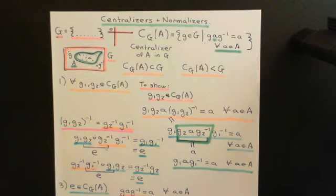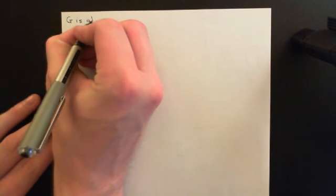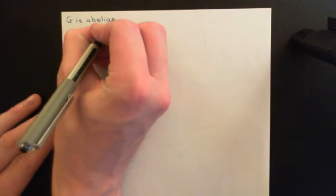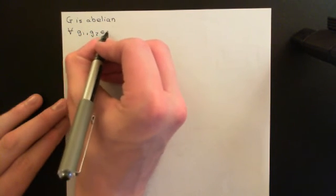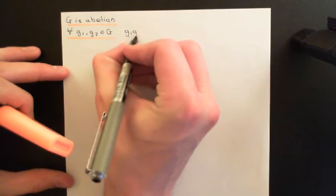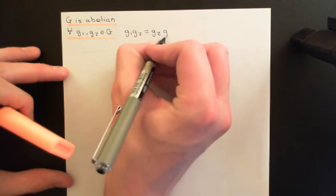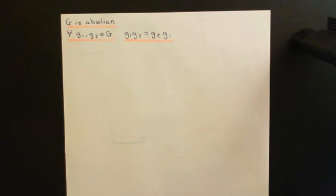The next point relates to the centraliser of an element in a group G. So firstly, let's talk about the centraliser of a subset capital A in an abelian group. Let's say G is abelian — a commutative group — meaning that for any two elements g1 and g2 in the group, g1 composed with g2 equals g2 composed with g1. The order of composition does not matter.